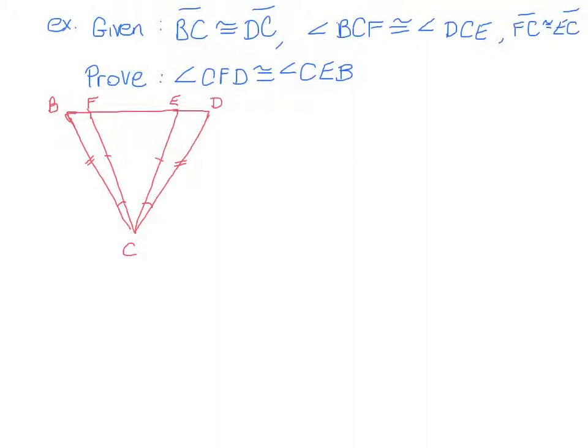Let's try a two-column proof that involves the side-angle-side postulate. In this example we are being asked to prove that two angles — angle CFD and angle CEB — are congruent to each other. I'm going to use a different color to mark those angles because we don't fully know that unless we've proved it. So we have CFD here and angle CEB over here. Those are the two that we're being asked to prove.